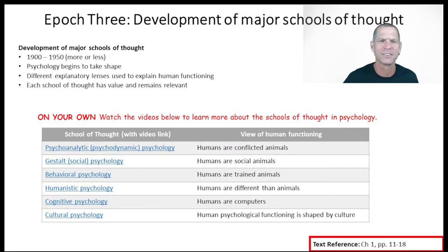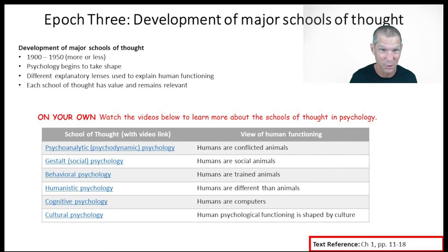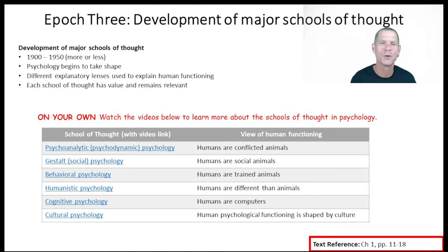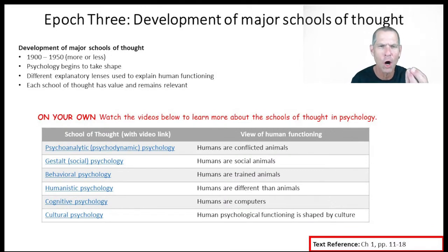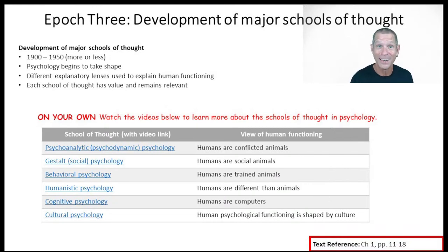The behavioral perspective says humans are actually trained animals. The reason you do things is because somebody rewarded you for doing those things, and the reason you don't do some things is because people punish you for doing them. Humanistic psychologists argue that humans are different from animals — yes, we have animal-like tendencies, but we also have hope, faith, belief, and optimism. So the humanists studied that aspect of human functioning. If you've ever heard of Abraham Maslow and his hierarchy of needs, Abraham Maslow was a humanistic psychologist.